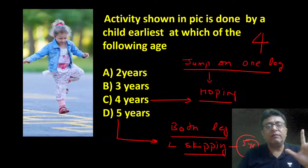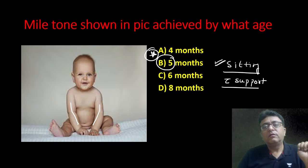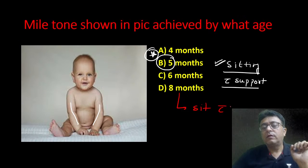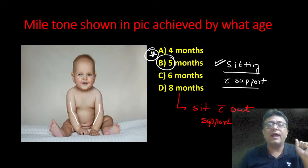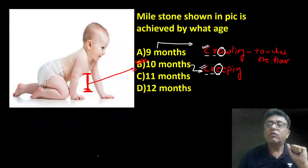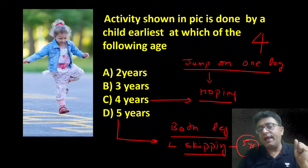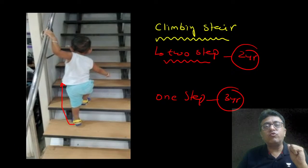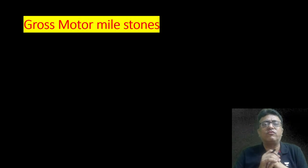Let me recall all images. Neck holding — three months. Sitting with support — five months. Sitting without support — eight months. Then crawling and creeping concept. Kick a ball and run well — two years. Ride a tricycle — three years. Hopping and skipping — four and five years. Upstairs two steps — two years. Upstairs one step — three years. These are clear.